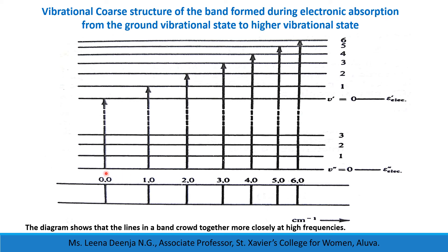Considering transitions from the lower electronic level to the upper: a transition from v″ = 0 to v′ = 0 gives one spectral line labeled 0,0; from v″ = 0 to v′ = 1 is labeled 1,0; from 0 to 2 is labeled 2,0; then 3,0; 4,0; 5,0; 6,0; and so on. At lower frequency the gap between spectral lines is large, while at higher frequency the gap decreases, so lines are crowded at the higher frequency side.